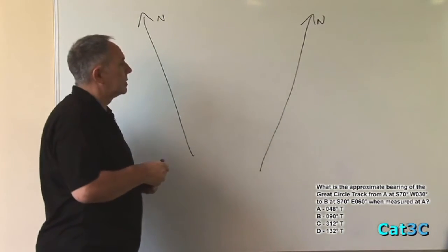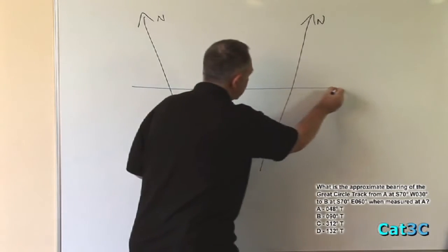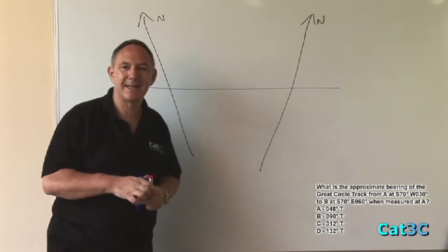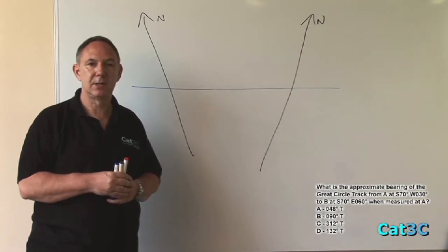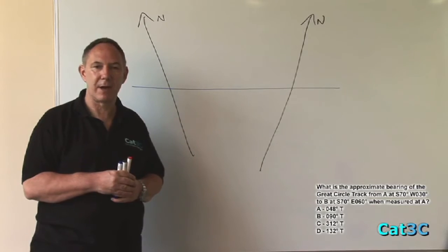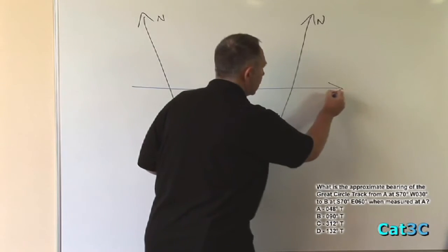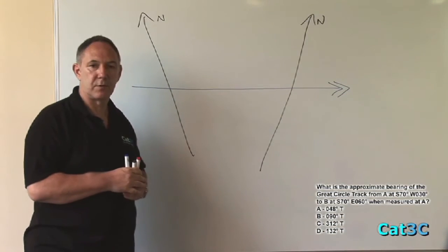The next thing we need to do is to place on the track line. Draw the track line straight across the two meridians like so and then identify the direction of travel. We're going from West 30 to East 60, so we're obviously travelling in an easterly direction. Easterly is left to right, so the track line is going left to right across our screen.